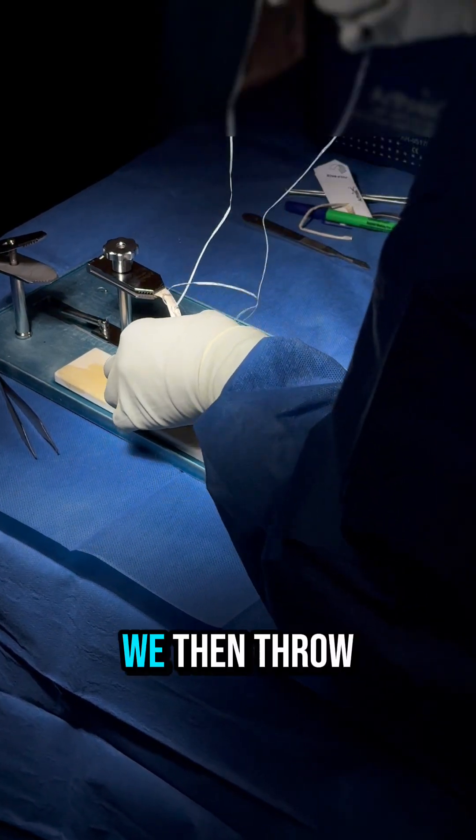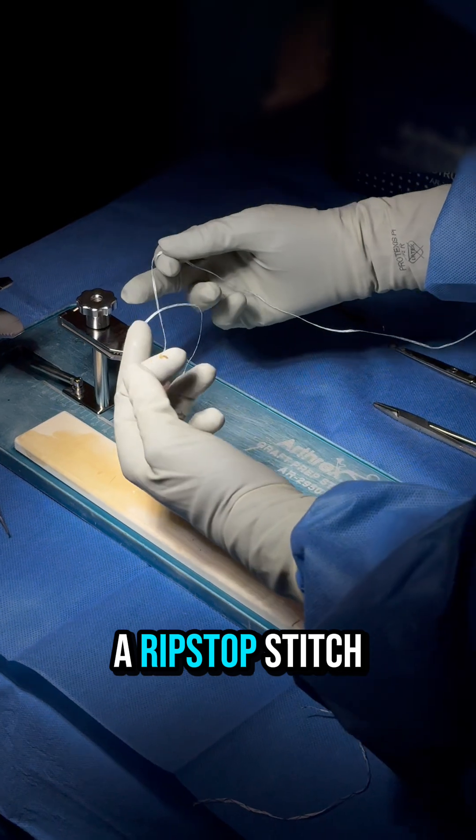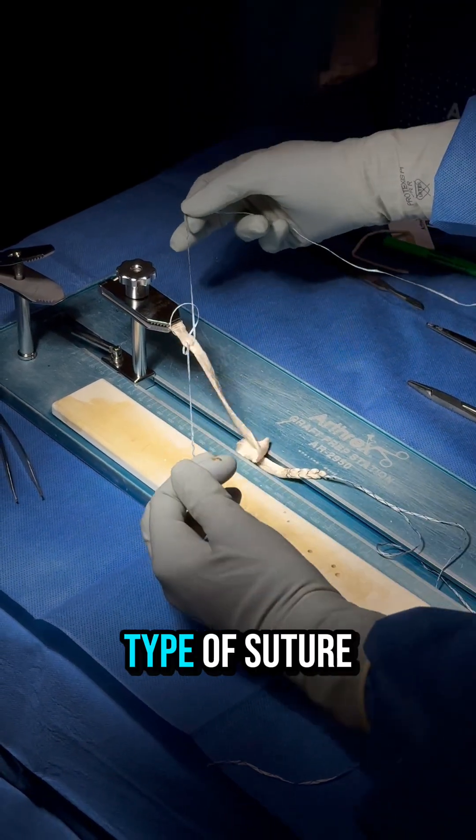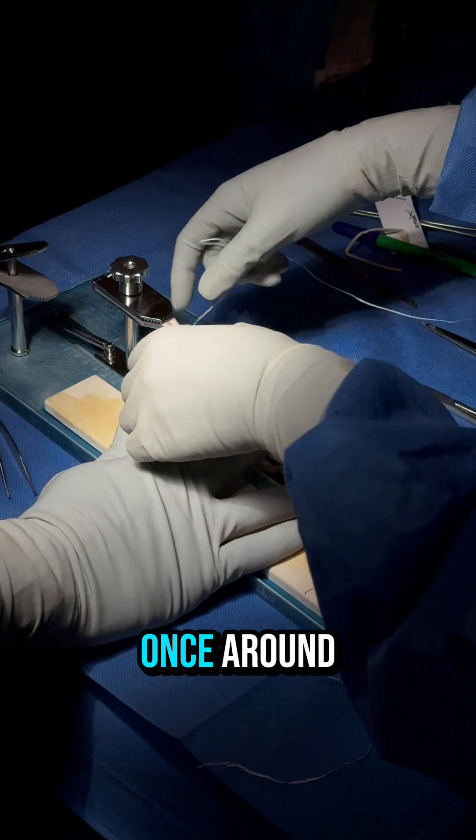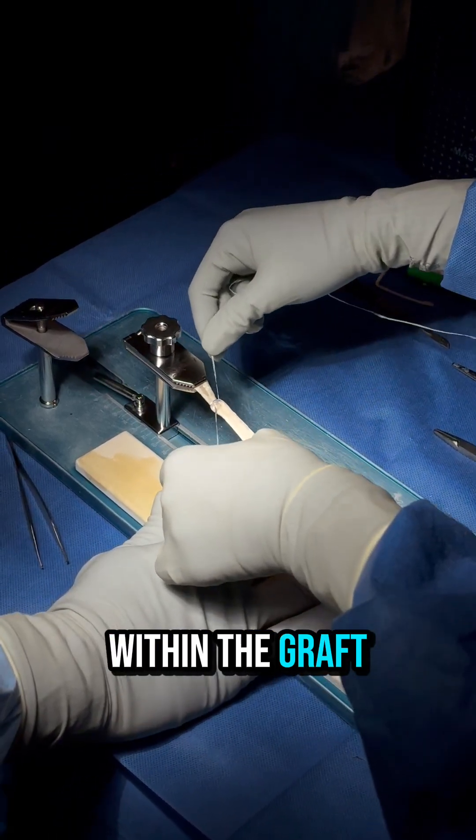On the anterior end, we then throw a ripstop stitch using a specific type of suture. This suture is once through and once around, then with an embedded knot within the graft.